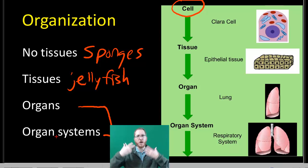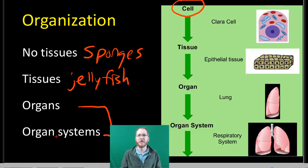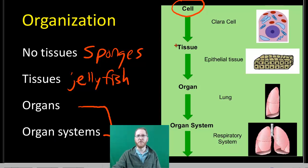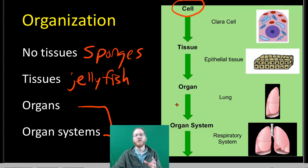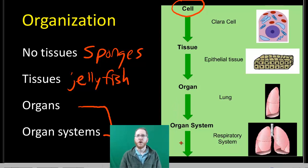Each part of our body has its own set function — you're not going to get your oxygen through your digestive tract. Each organ system performs its own specialized role, and that is this idea of organization. I hope you've enjoyed this section and I'll see you soon.